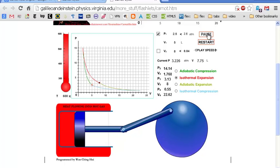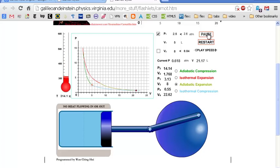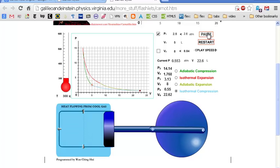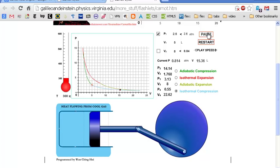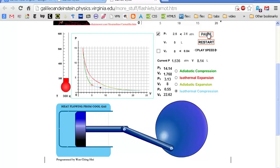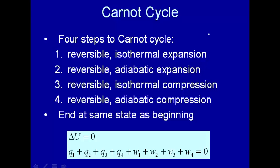Expand isothermally. Expand adiabatically. Compress isothermally. Isothermal compression. And then finally, we will compress adiabatically. Temperature changes. That's the Carnot cycle. And we're going to look at this thermodynamically.